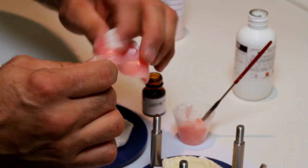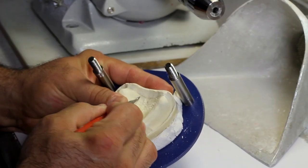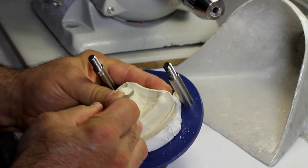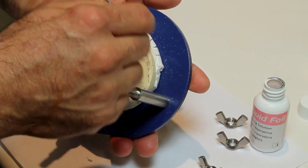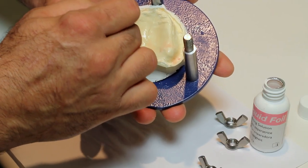Then, replace it teeth first into the jig. Carve a post dam on the working model to ensure firm palatal seal. Then, paint the working model with Lange's liquid foil and let it dry for one to two minutes.